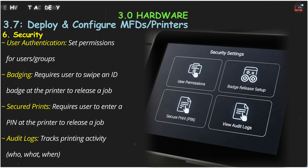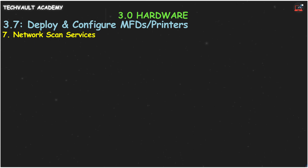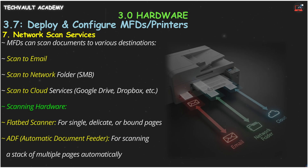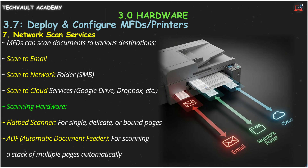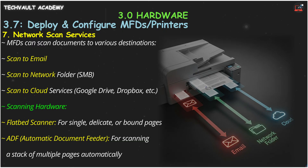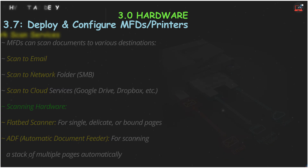This prevents your confidential printouts from sitting in the output tray for anyone to see. Don't forget audit logs, which track who printed what — useful for monitoring usage and costs. MFDs are also powerful scanners, offering network scan services. You can scan directly to email, to a shared network folder using SMB (Server Message Block), or directly to cloud services like Google Drive or Dropbox. Most MFDs have a flatbed scanner for single pages or books, and an ADF (automatic document feeder) that automatically feeds a whole stack of pages for large scanning jobs.